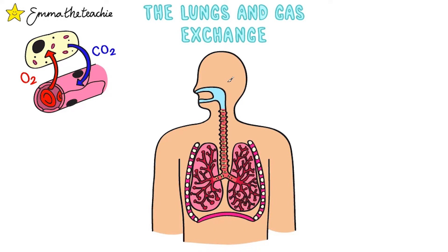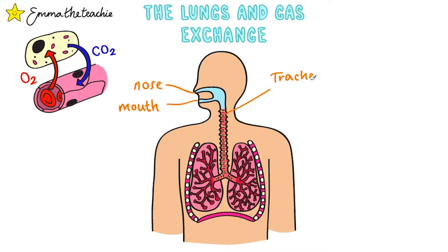You need to know the structure and adaptations of the lungs, so let's start by labeling this diagram. Why not pause and see how many parts you can already name. Up here we have the nose and the mouth, and those bring air into the body, and then here we have the trachea, or the windpipe. This has rings of cartilage to keep it open.